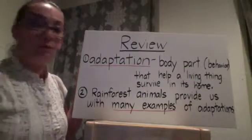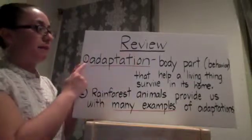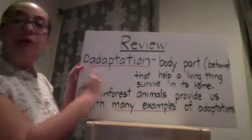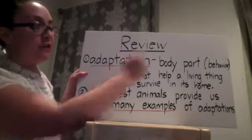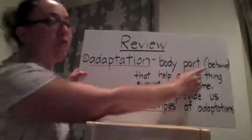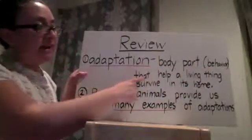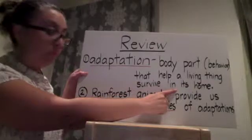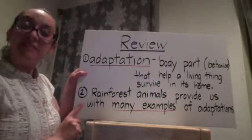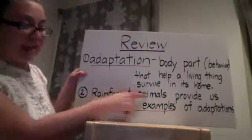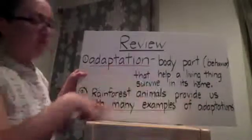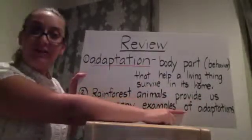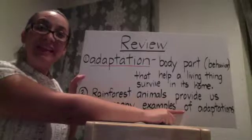Now let's review. Adaptation — we know now that an adaptation is a body part or behavior that helps a living thing survive in its home. We have also seen tonight that rainforest animals provide us with many examples of adaptations. See you next time. Bye-bye.